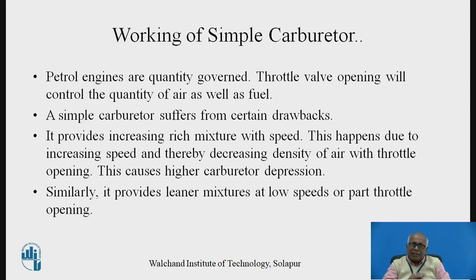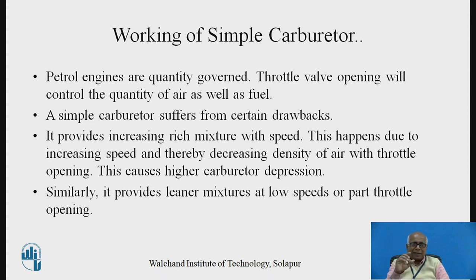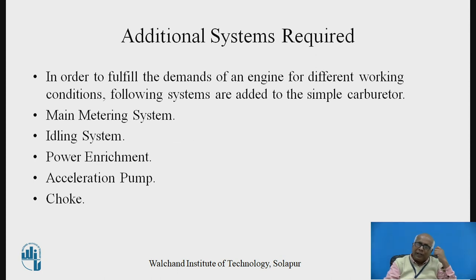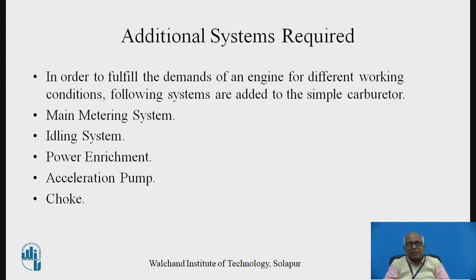Similarly, it provides a lean mixture at low speeds or part throttle opening, because in the beginning the fuel flow will be lesser due to the lesser amount of carburetor depression. In order to fulfill the demands of an engine for different working conditions, we have to modify the design of the simple carburetor and remove its drawbacks. The additional systems are: main metering system, idling system, power enrichment system, acceleration pump, and choke. Let us study these systems one by one.